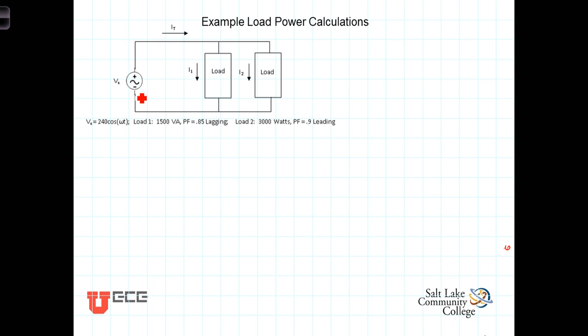We have a source here with two loads in parallel. That's a pretty standard way of hooking up power equipment, where you'd have the same voltage going to a number of different loads. Each of these typically would represent a separate circuit in your distribution box. In power systems, you won't hook them up in series, because in series you'd have a voltage division situation where you wouldn't be getting the full source voltage across the equipment.